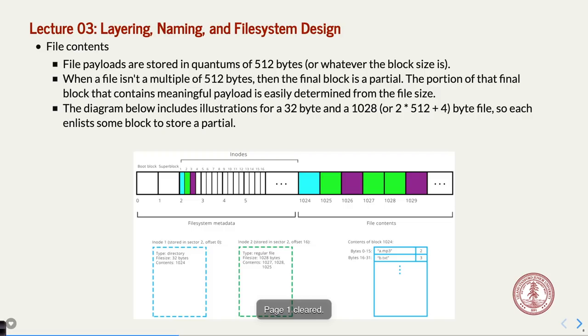If you have a file that is one byte long, that file takes up 512 bytes on the drive — that's the smallest amount we can deal with, plus the metadata. This is why tiny files can actually end up using a lot more space than you might think. This is how this particular file system works; more advanced file systems may handle this differently.